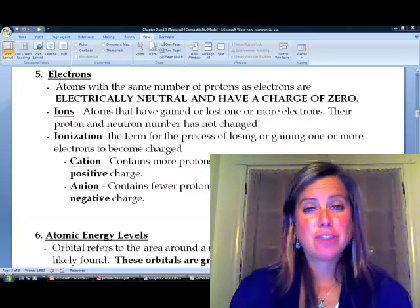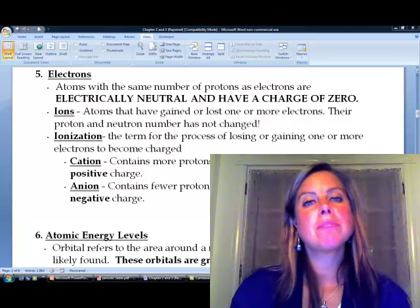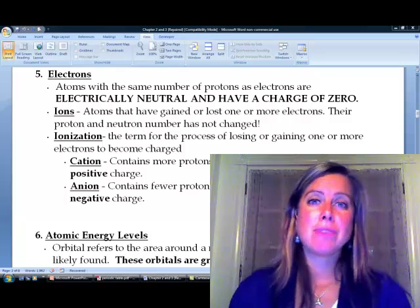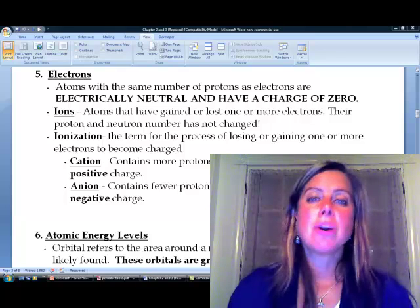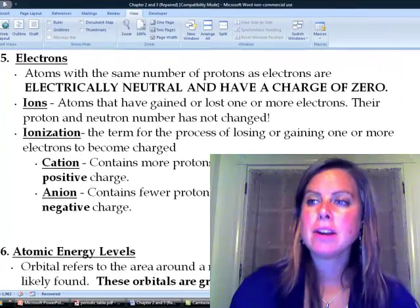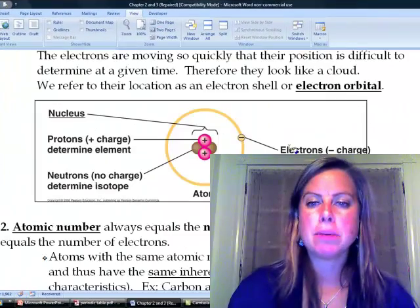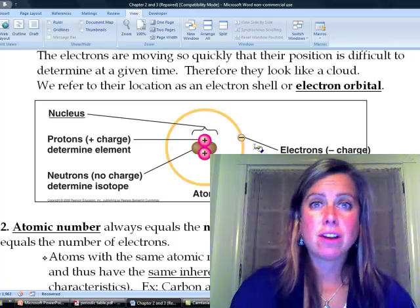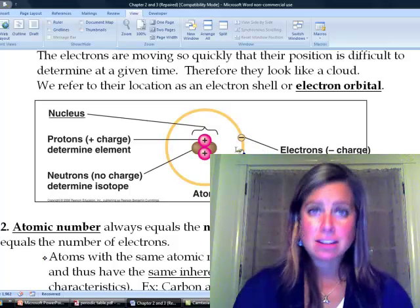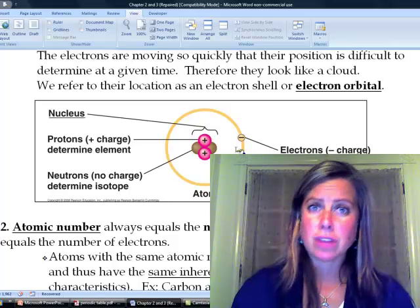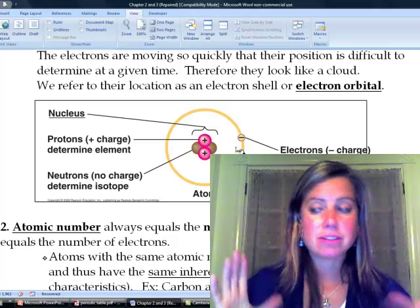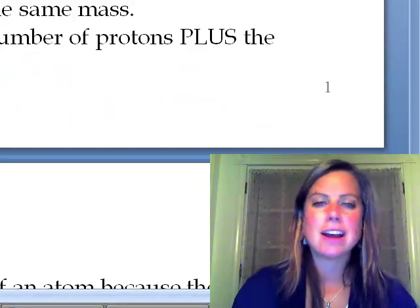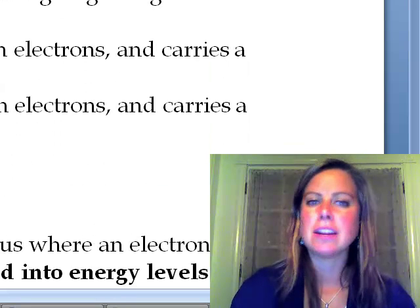Now we're going to get into electrons, and electrons are important because they actually determine how a molecule or an atom is going to react with other things. If you remember, we had that picture of helium, and it had the same number of protons as electrons. Those cancel each other out, so it's electrically neutral. That's how things sit in the periodic table, but sometimes that's not exactly reality.